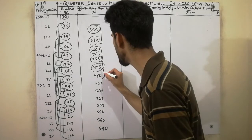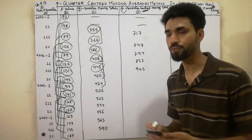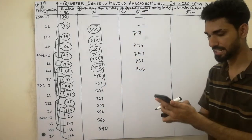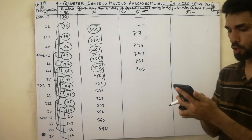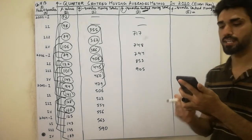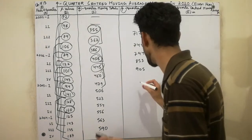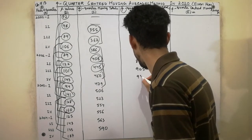Now we leave that value 905 and next we add up the next two values: 460 plus 479. We get the value 939.